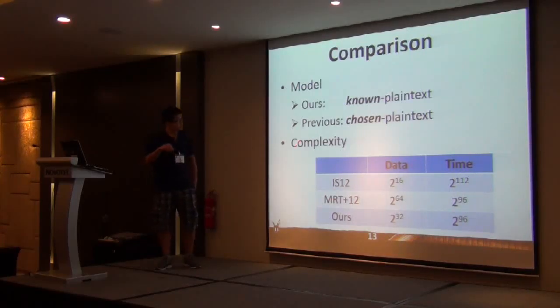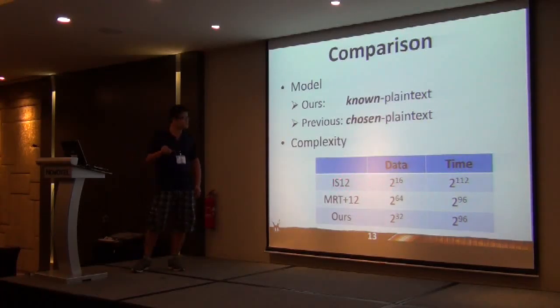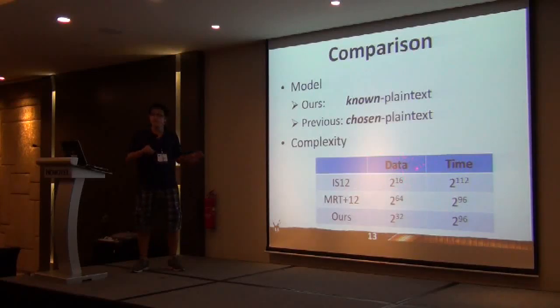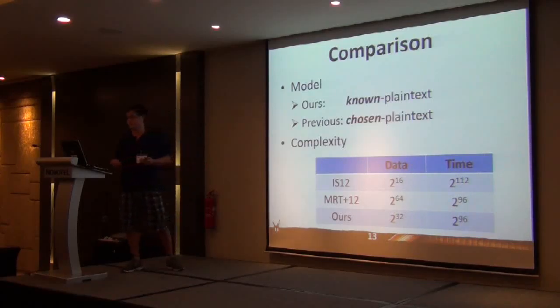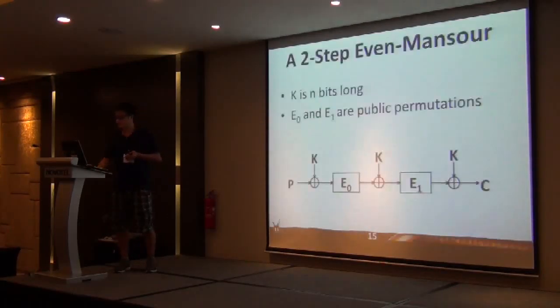Compared to previous work, our attack is a known plaintext attack. For the complexity, we need 2^32 data compared with the previous work where the data complexity is greatly reduced. They need the entire codebook. We can have the same data complexity, but we can go even further. You can use more data to reduce time complexity further.